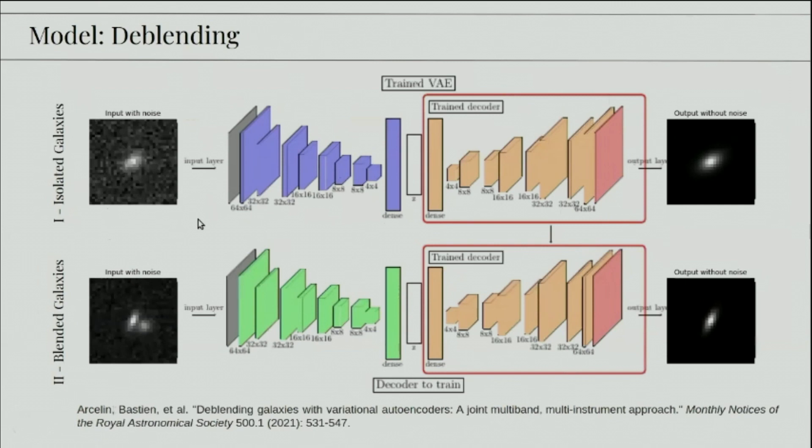The deblending algorithm uses two such variational autoencoders. The first one trained on isolated galaxies, and the second one on blended galaxies. So you can see here that there are two clearly visible sources. The second one uses the trained decoder of the isolated galaxies VAE, since this one is trained to produce a single galaxy.